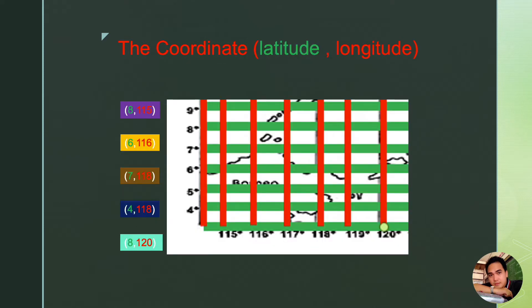We have here five examples of coordinates: 8,115 — 6,116 — 7,118 — 4,118 — and 8,120. Each pair of numbers is a coordinate, referring to one latitude and one longitude. Latitudes are written first, as this also denotes the x-axis, followed by the longitude, which is the y-axis. Wherever the longitude and latitude meet is the position or location referred to by that coordinate.